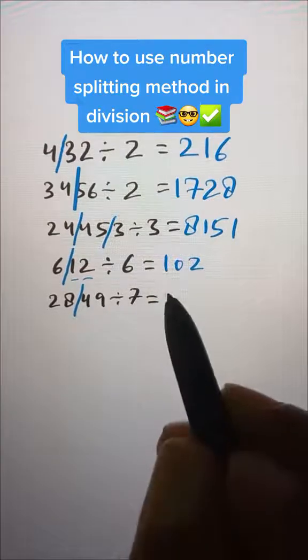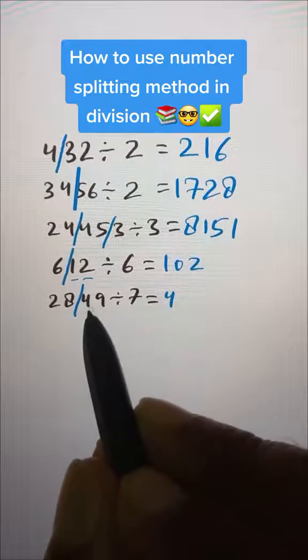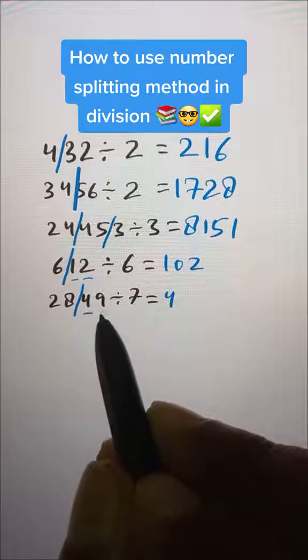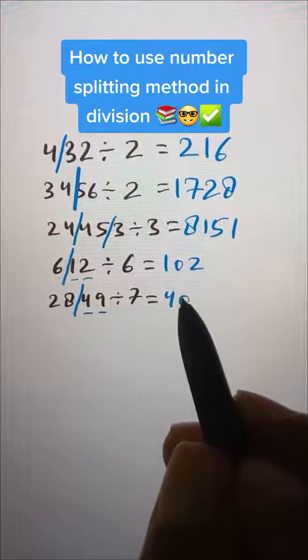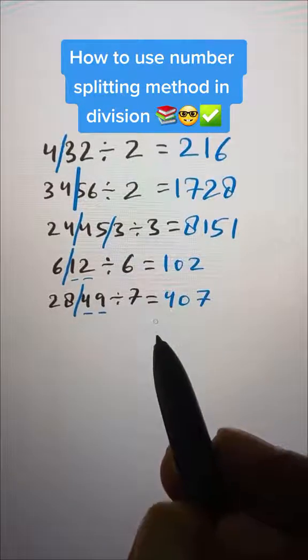7 times 4 is 28 and 7 times 7 is 49. But we have 2 digits here, so we will put 0, 7. That's our answer, 407.